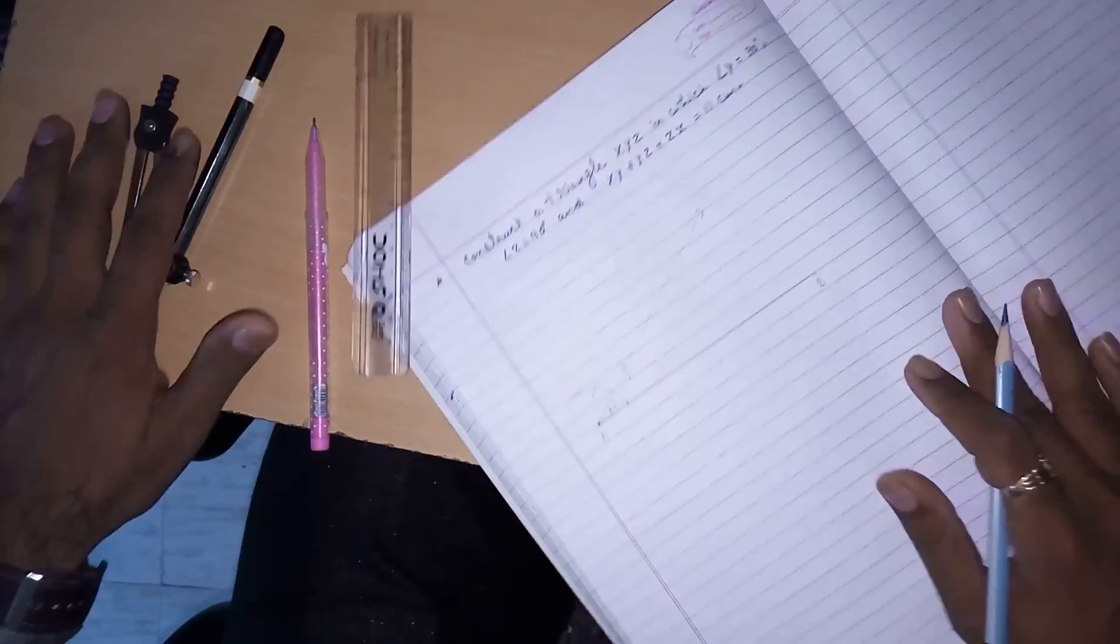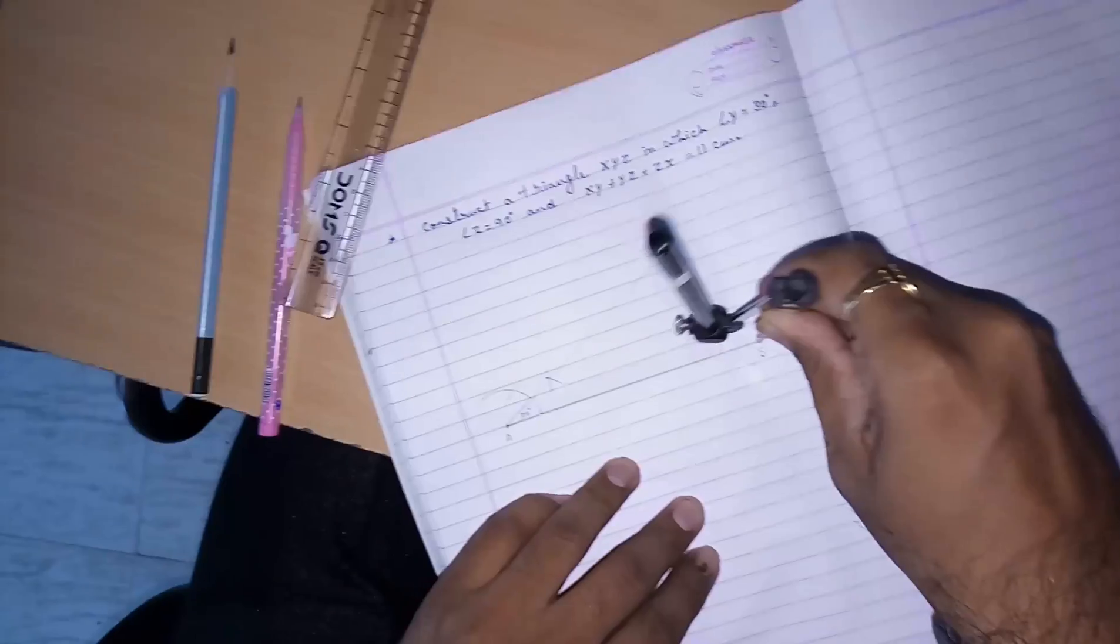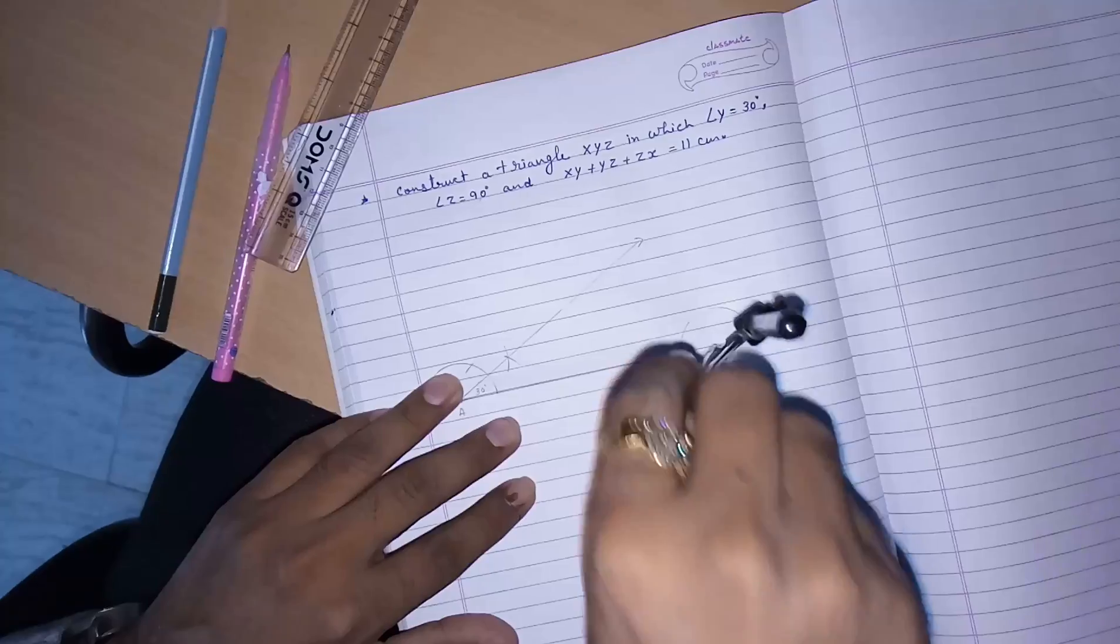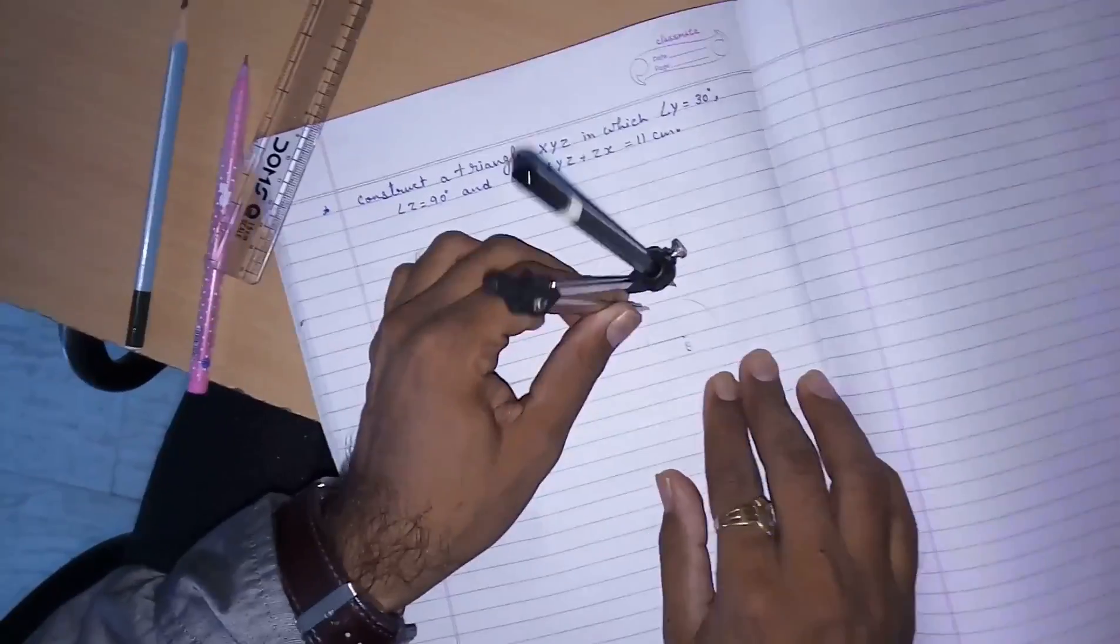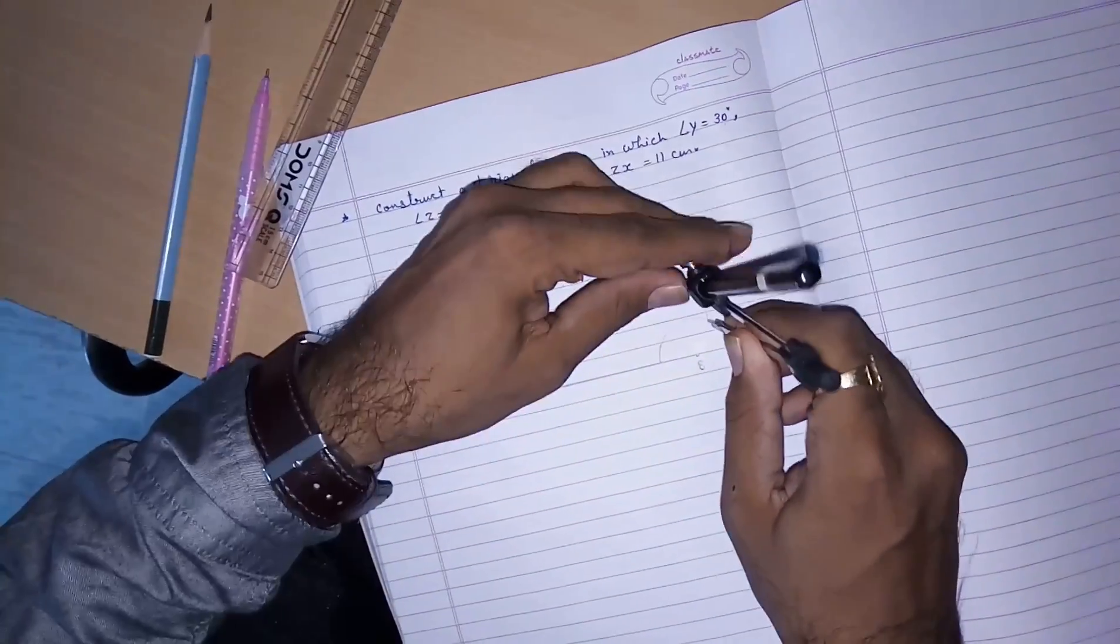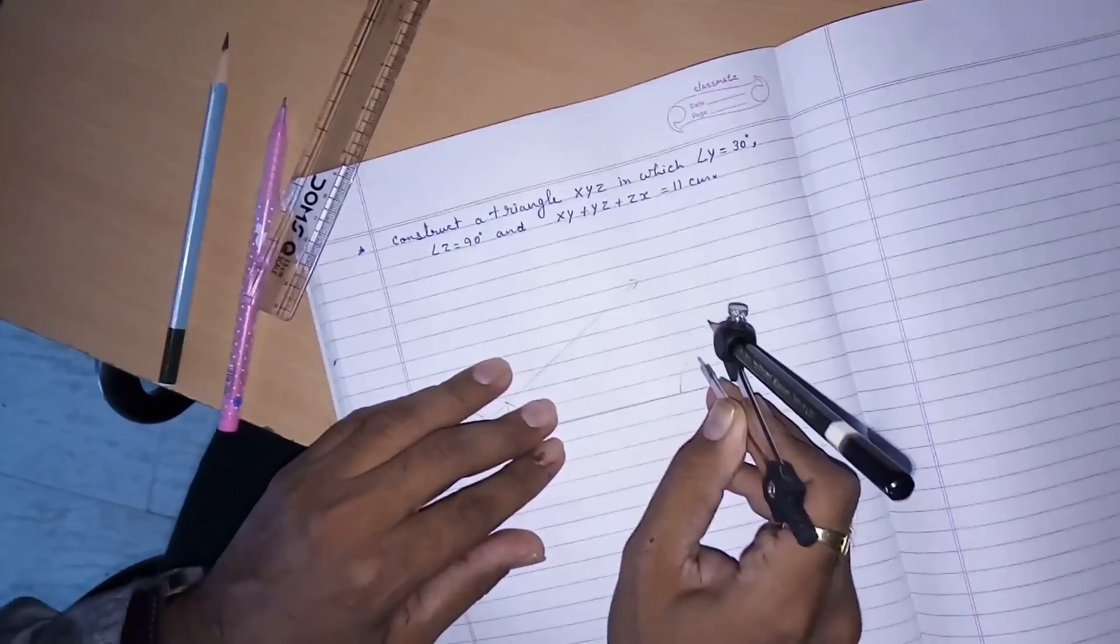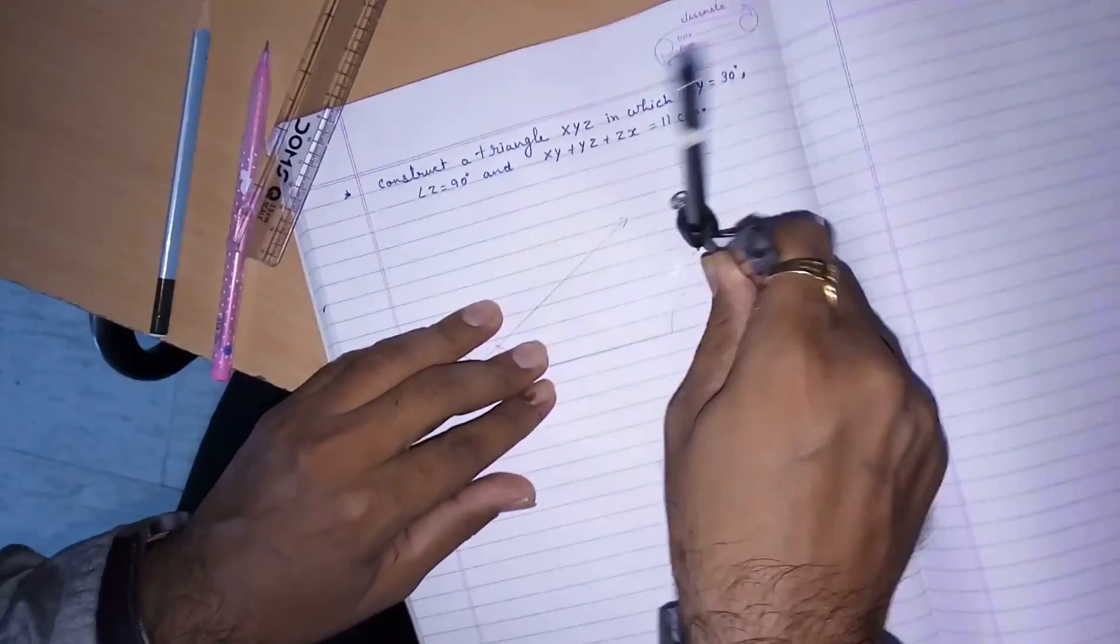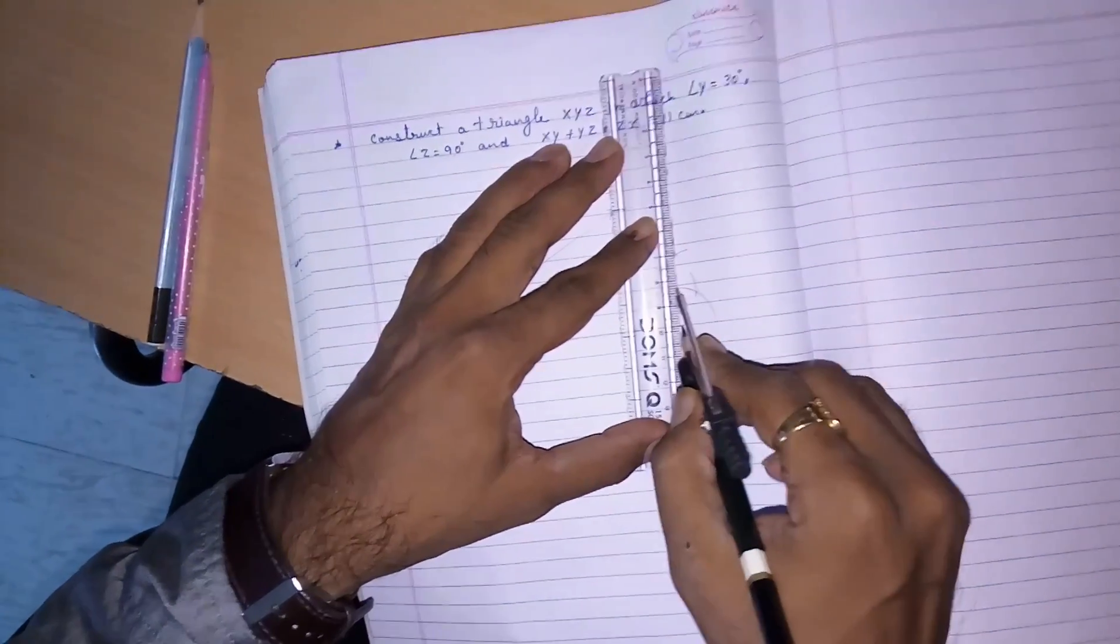Now, 90 degrees on the other side. I am bisector of 60 and 120, somewhere here. So, this will be 90 degrees.